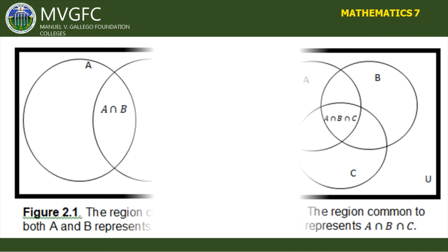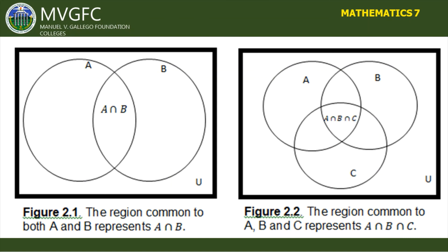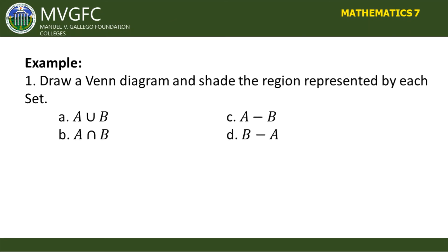Venn diagrams help visually represent the similarities and differences between two concepts. In a Venn diagram, a rectangle represents the universal set, and the circles inside the rectangle represent the sets being considered. The region common to both circles represents the intersection of A and B. If there are three sets, three overlapping circles are used, and if there is no common element, nothing is written in the intersection region.